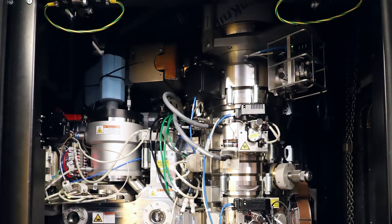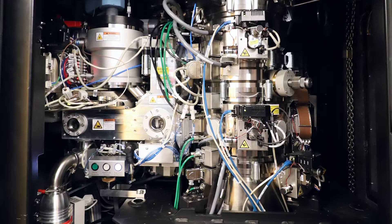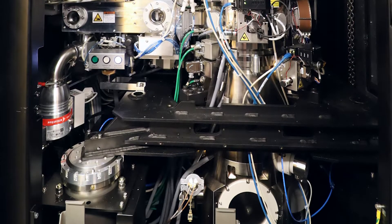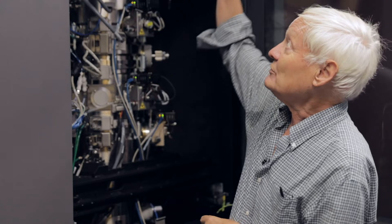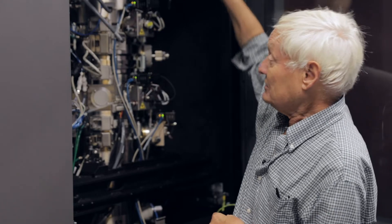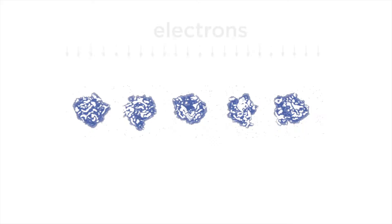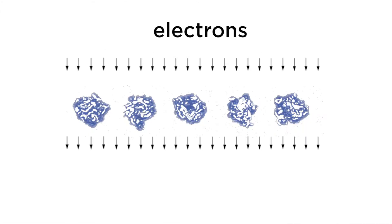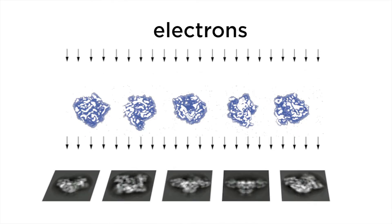There are other microscopes, this is one of them, which are much more powerful and they use electrons instead of light. Electrons travel from the top down to the bottom through a very narrow column, so when the electron hits the molecules get scattered and then these scattered rays are combined to form an image.